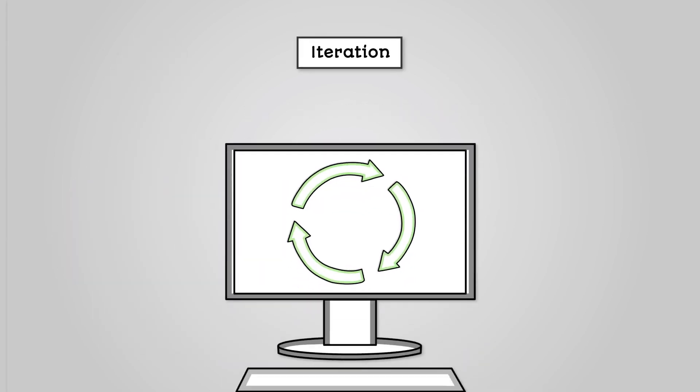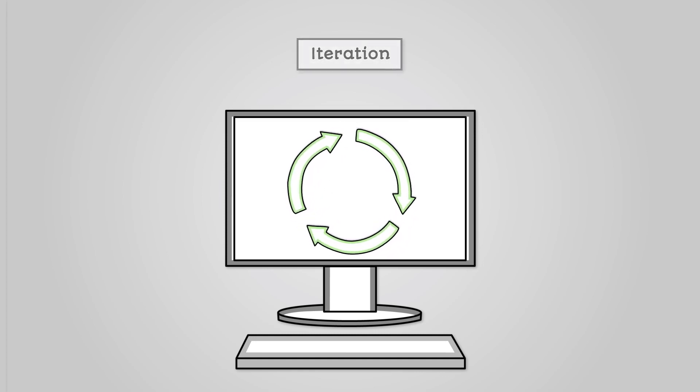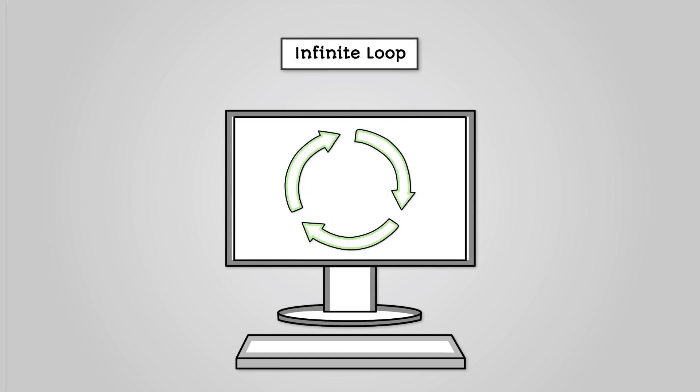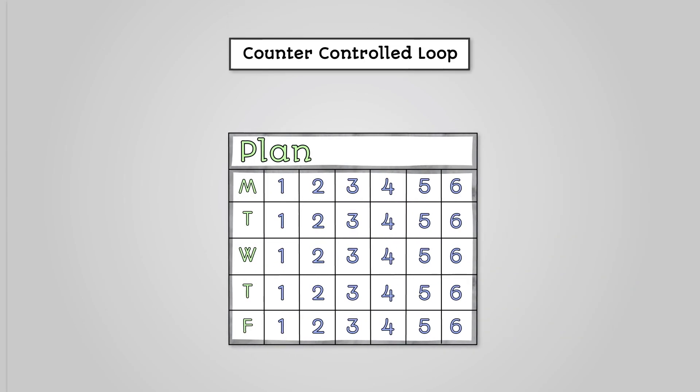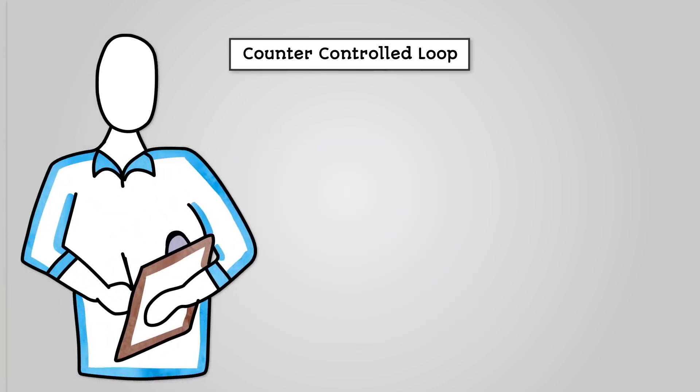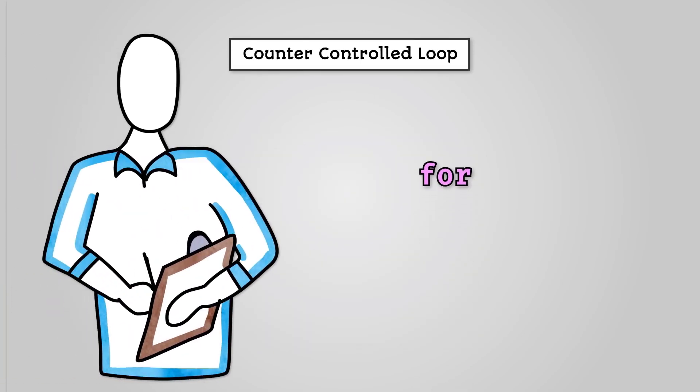So the process of getting your code to repeat more than once is called iteration. Counter controlled iteration uses a counter that checks against the target. The counter needs to go up at the end of every loop otherwise your program will enter an infinite loop. Counter controlled loops are used when you know in advance how many times your program needs to loop. Counter controlled loops are coded using the for statement. Python also has a range command that is used with for loops. You can specify when to start or stop your range as well as how much your counter goes up and down.